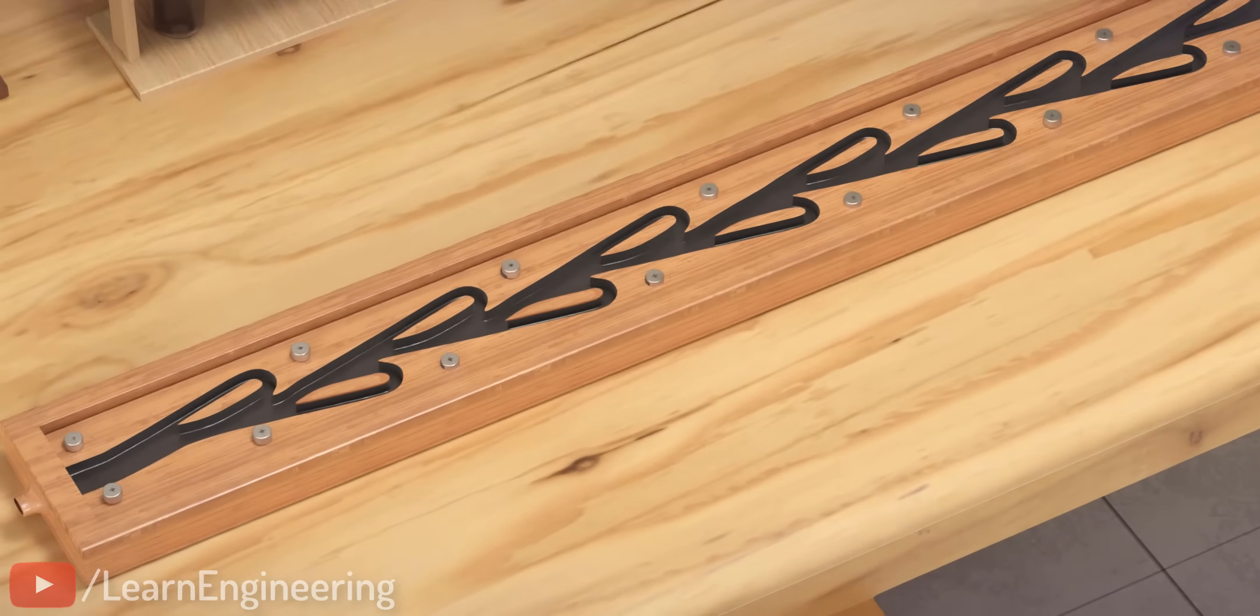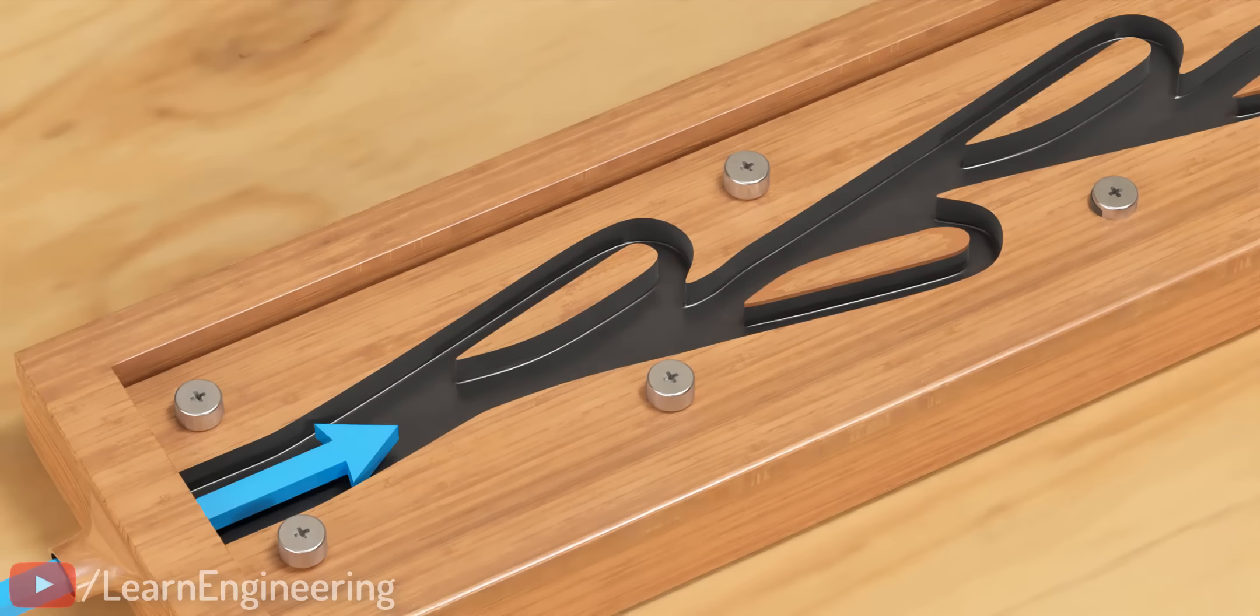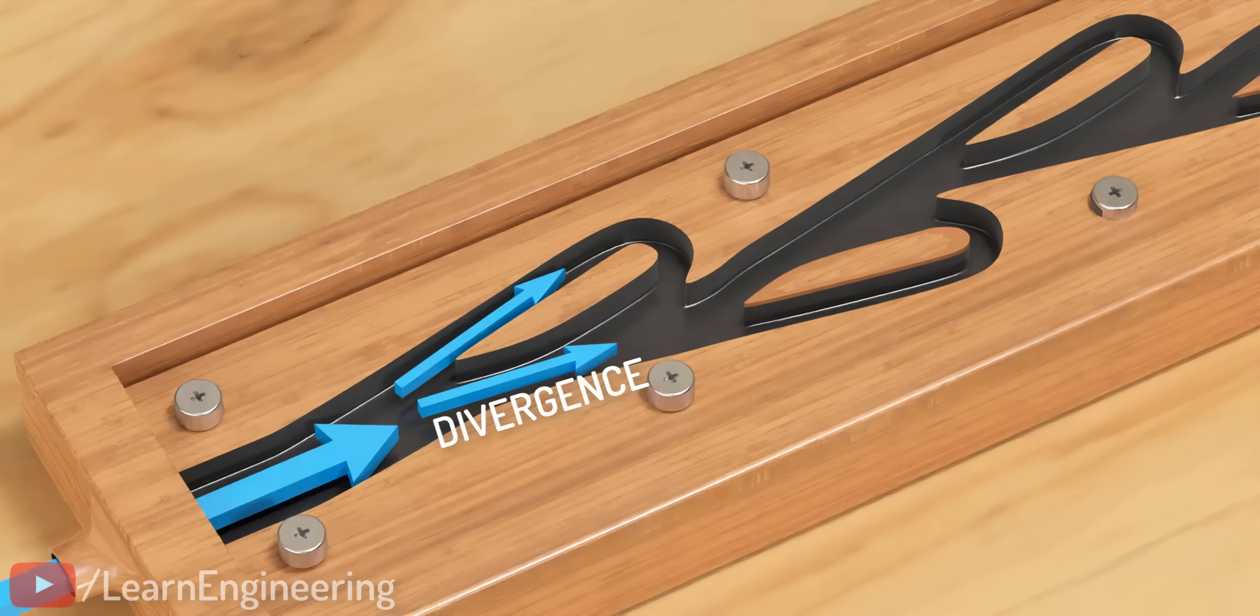When fluid enters from the left, the flow again gets divided into two streams. In the bottom section, the flow diverges, and the adverse pressure gradient will make life difficult for it. The second stream hits the bucket-like structure and loses its momentum.